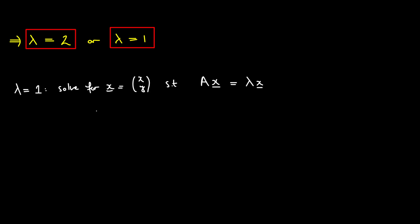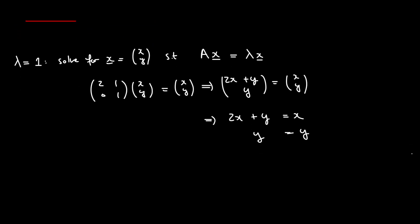And here we can just unravel what this means. In our case, we're going to have 2, 1, 0, 1 times xy is equal to lambda. But now lambda is 1 times x, so we get this. And here we can just multiply, get 2x plus y, y is just equal to xy. And what you have here is nothing but a simultaneous equation where you have 2x plus y equals x, and you have here just y equals y.